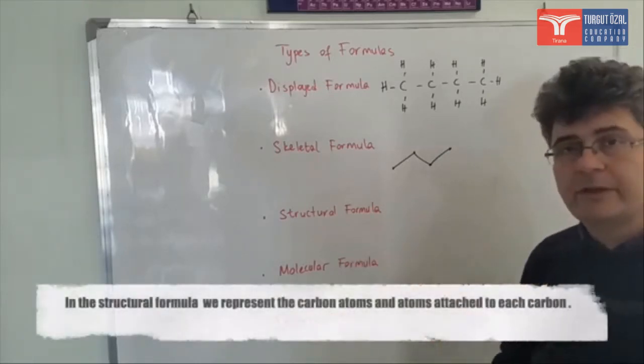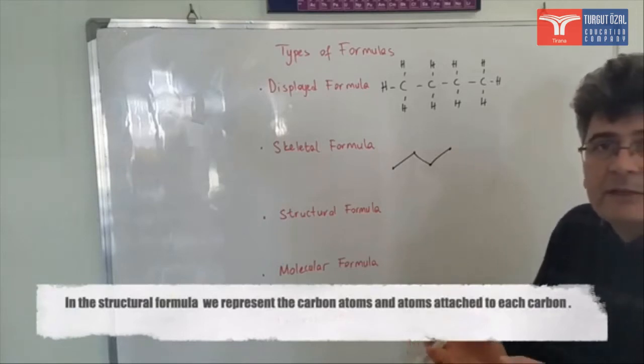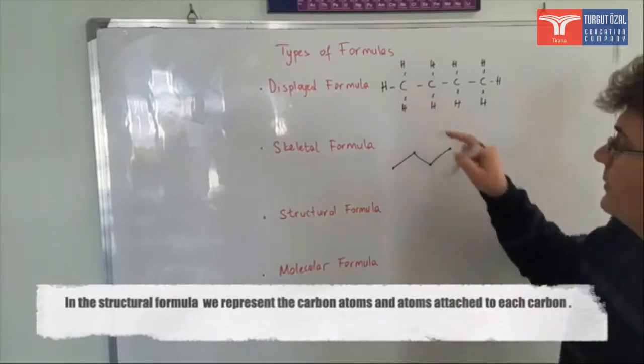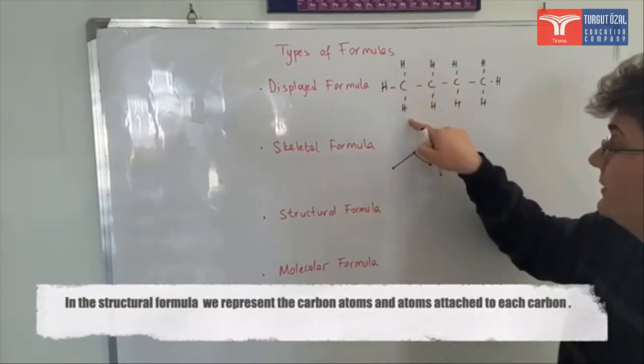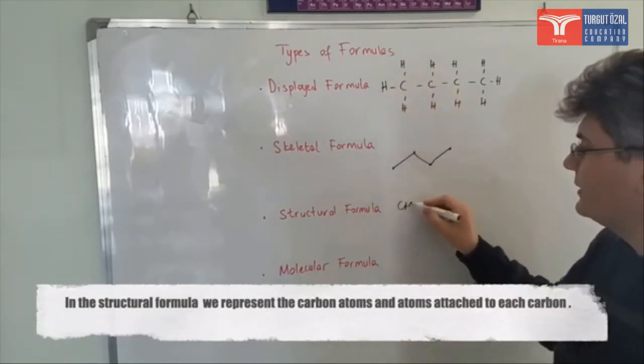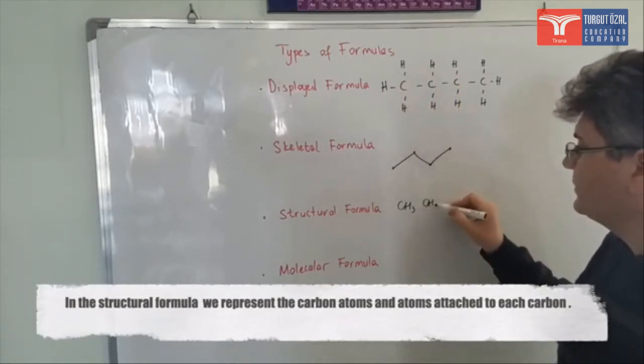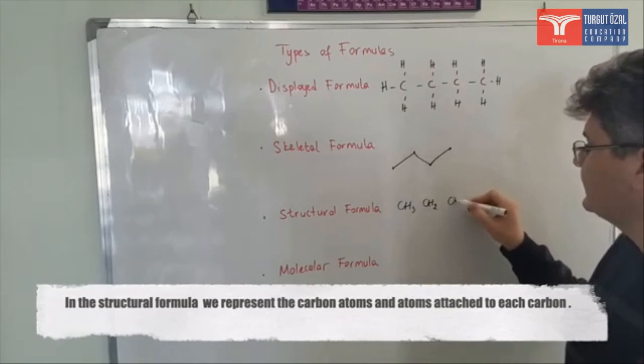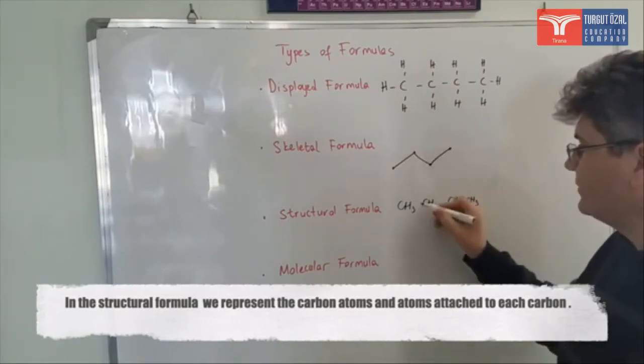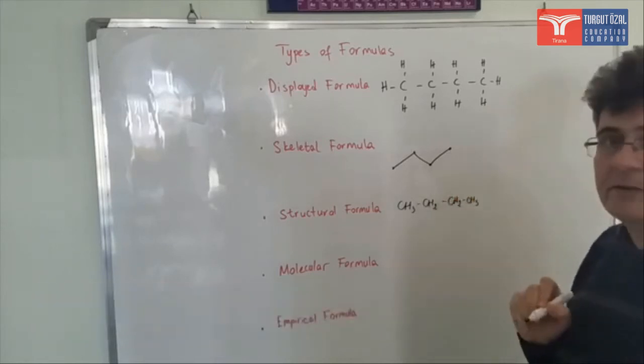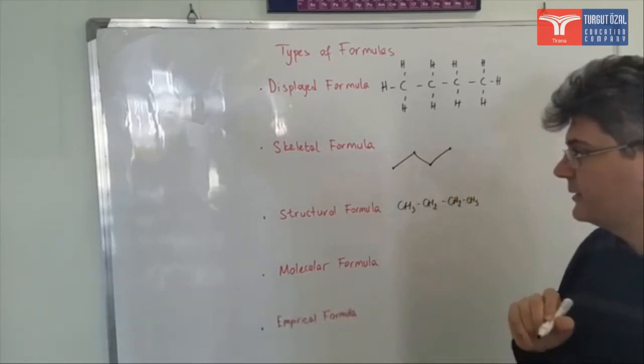What about structural formula? In the structural formula we are showing the atom and the atoms which are connected to that together. For example, in here the first carbon atom is connected to one, two, three hydrogen atoms. So what I write is CH3. Second one is connected to two hydrogens, so it's written as CH2. Next is CH2 again. Next is CH3. You can leave it like this or you can use these to represent the bonds between the carbon atoms like this.